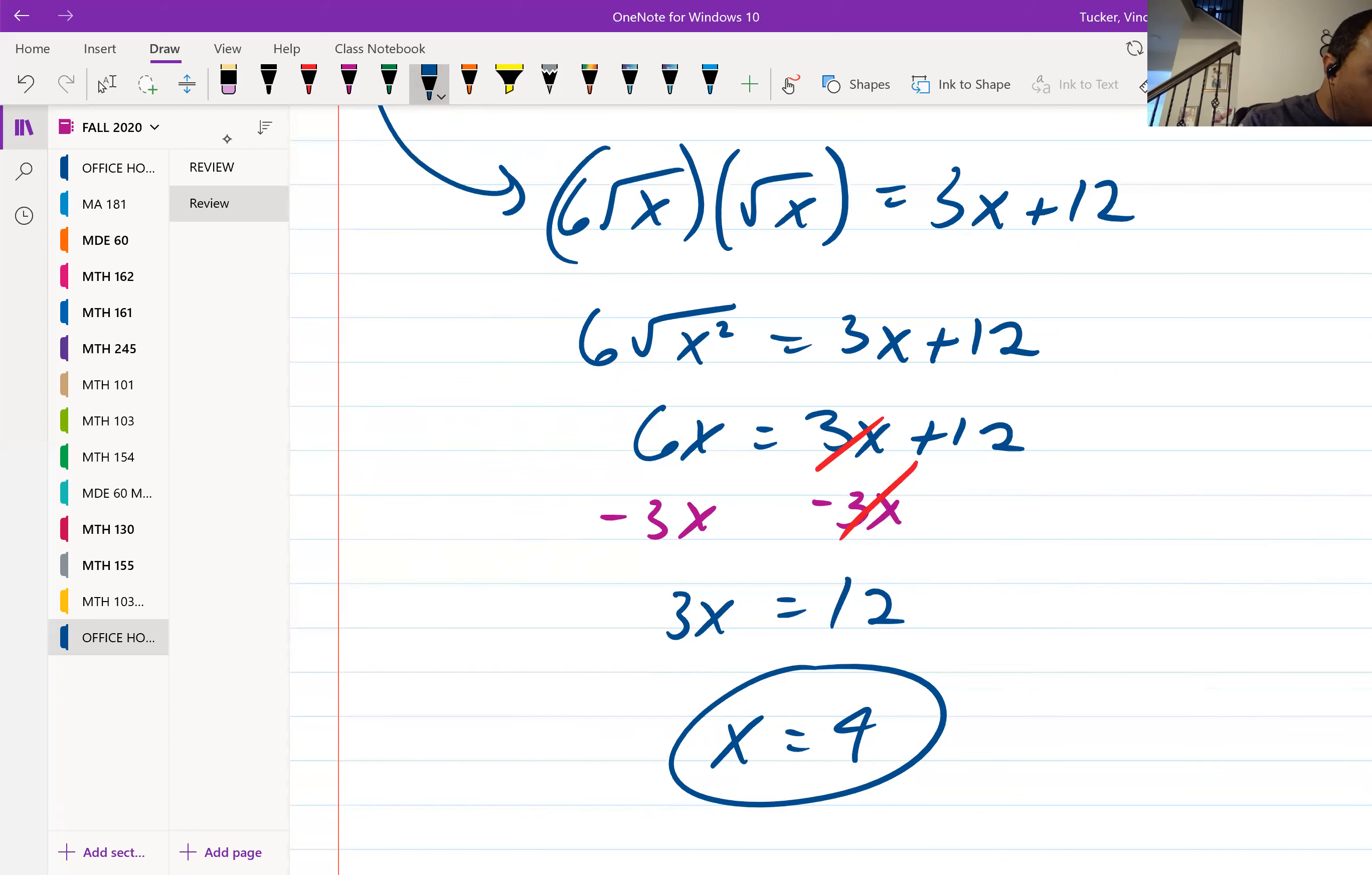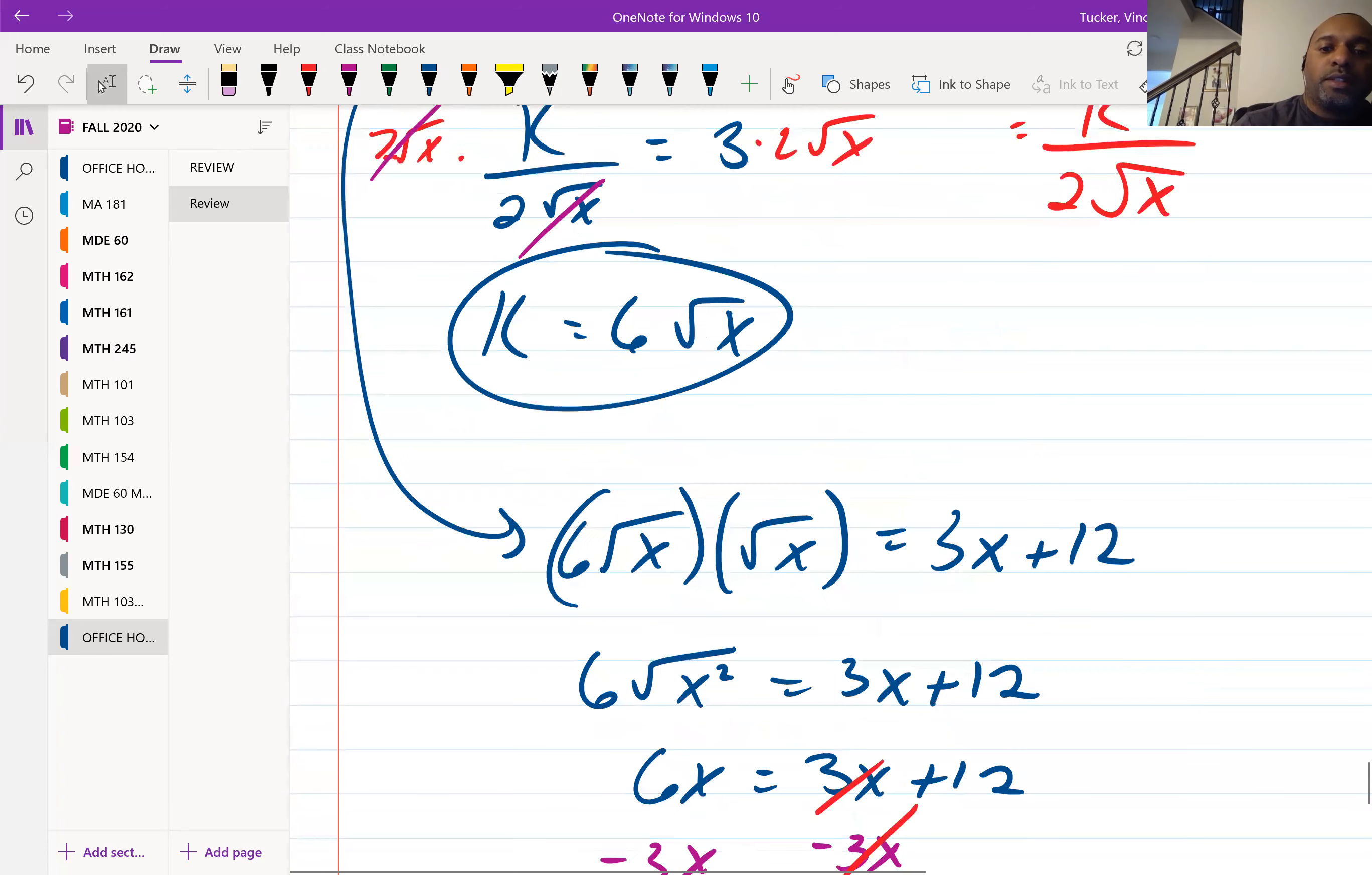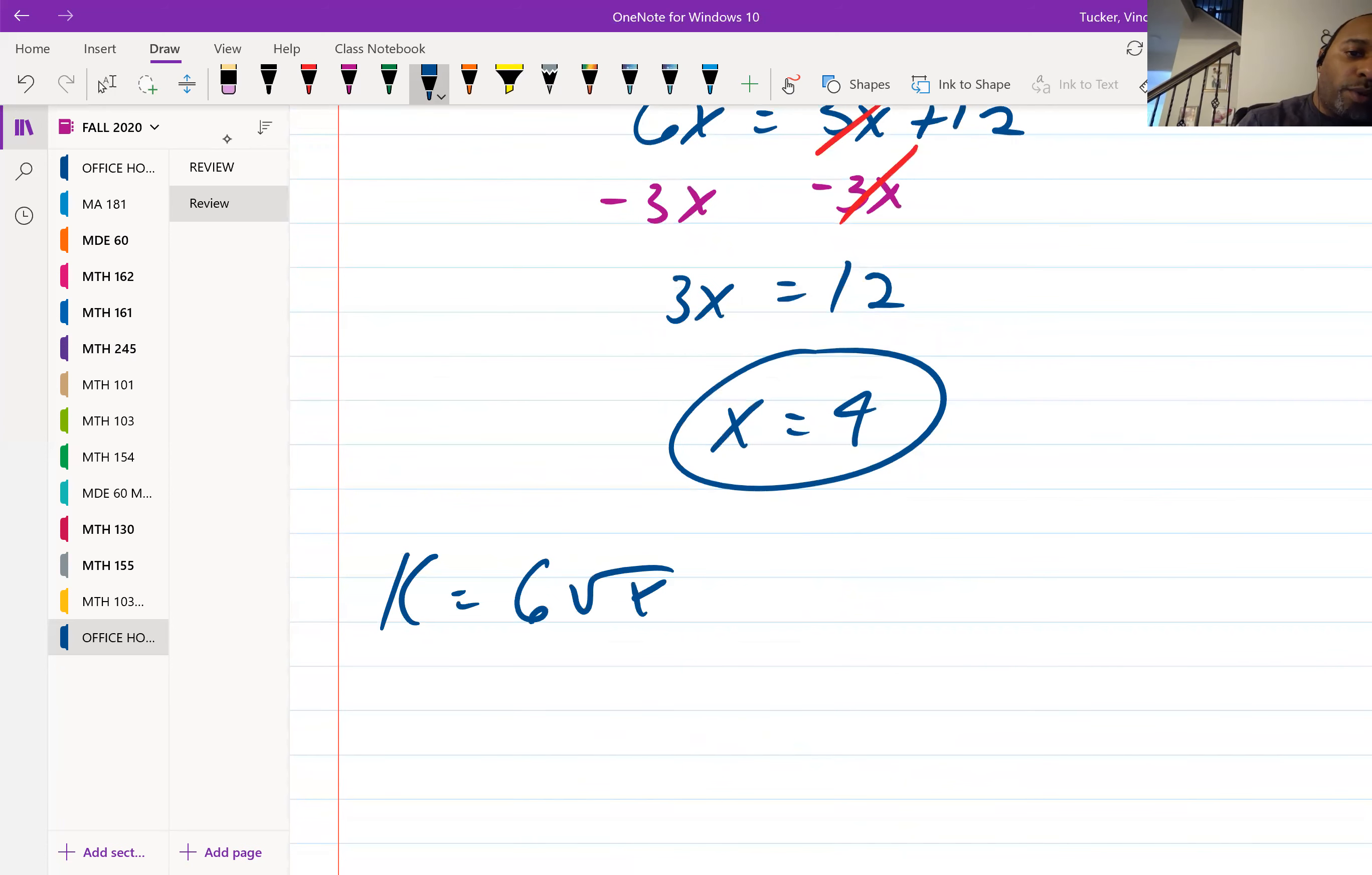So I believe that's all you needed there. We can find actual k here because we can plug in for x. So k is equal to 6 square root of x. Plug in 4 here, 6 times square root of 4, 6 times 2, and that'll be 12. So k is 12 and x is 4. Well, all you wanted was k, so k is equal to 12.